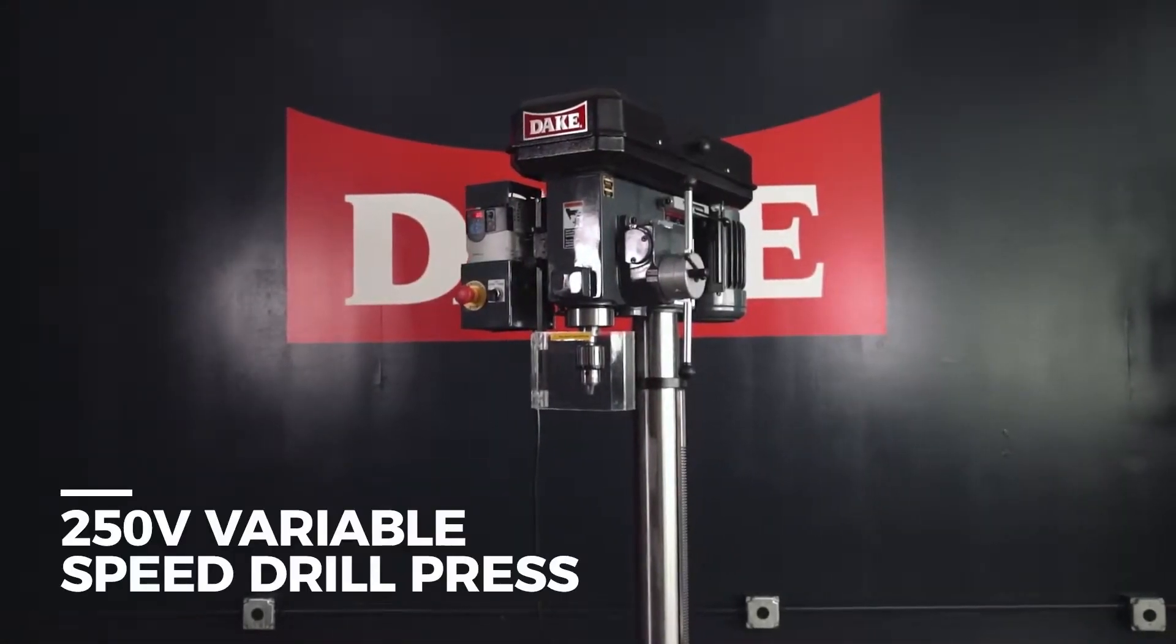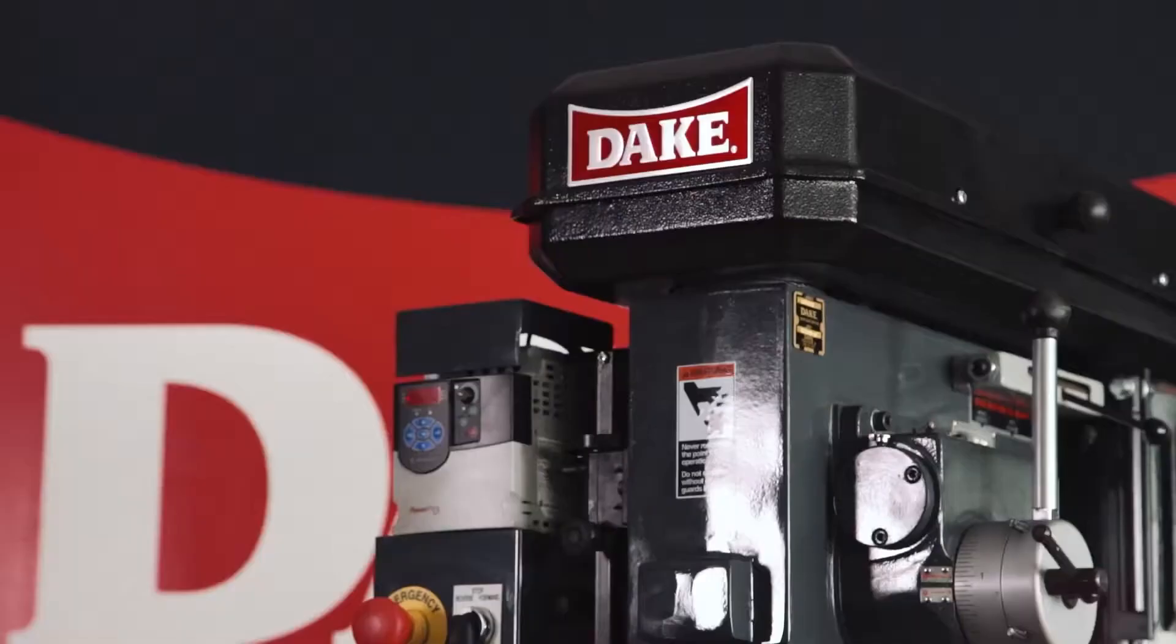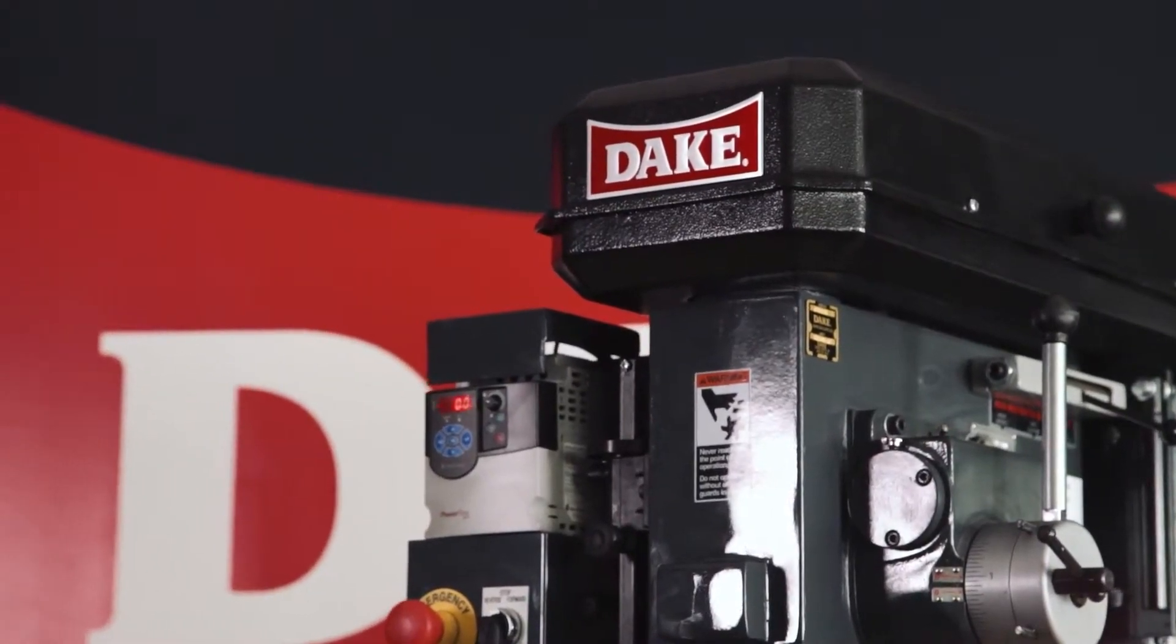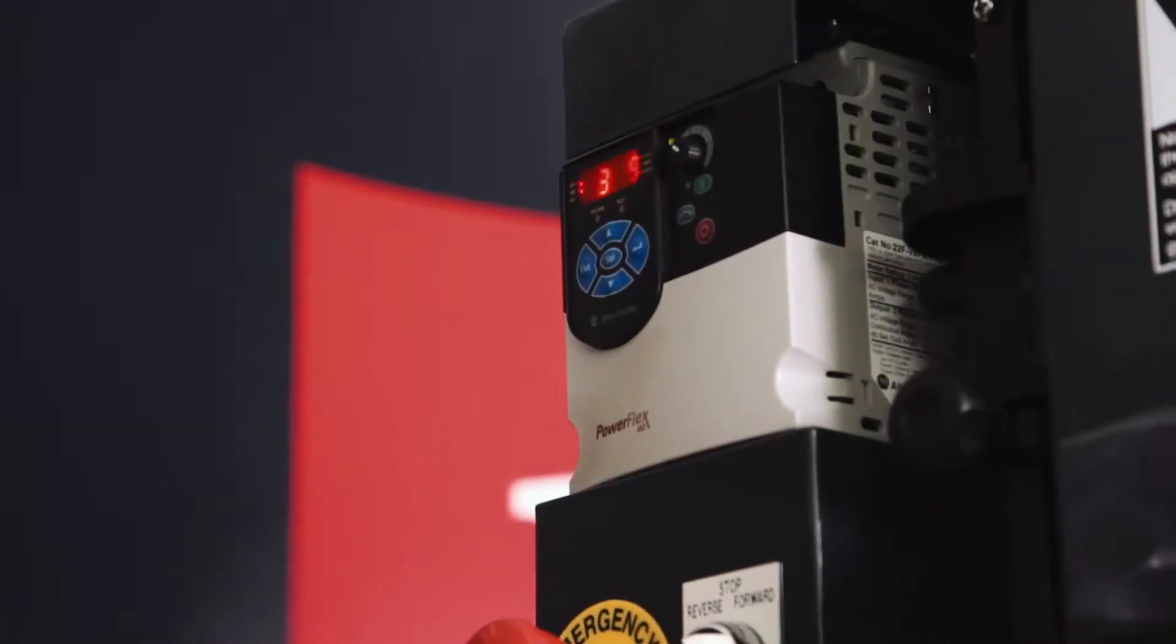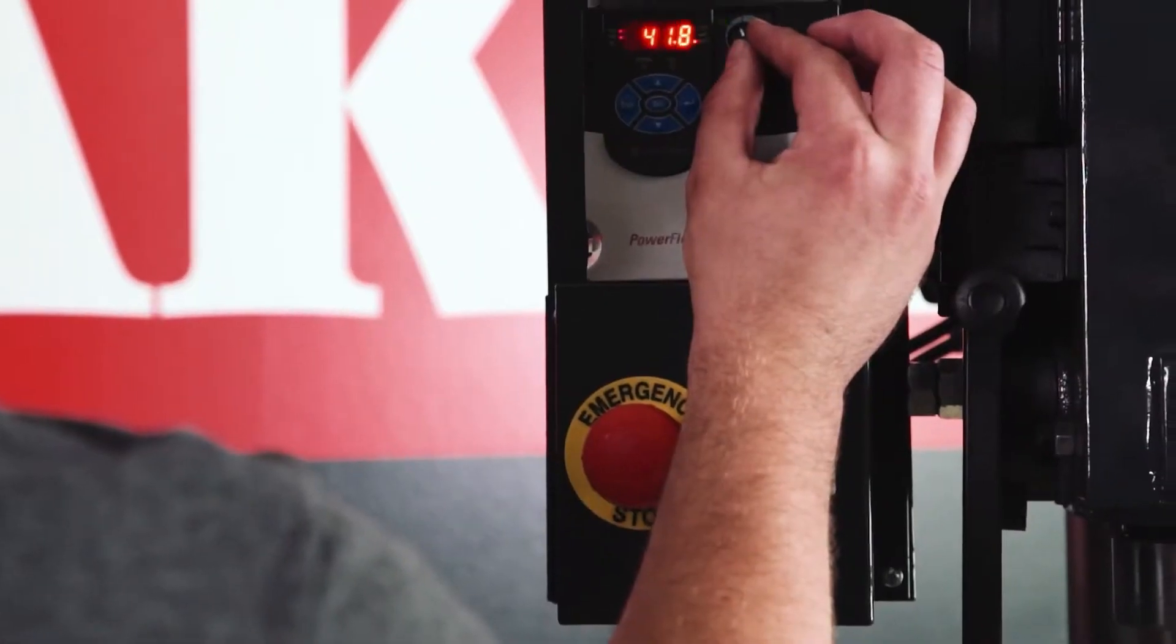Introducing the 250V Variable Speed Drill Press from Dake. The 1-inch drill capacity 250V floor model drill press has a variable frequency drive for variable speed options from 68 to 1380 rotations per minute.